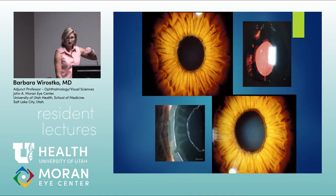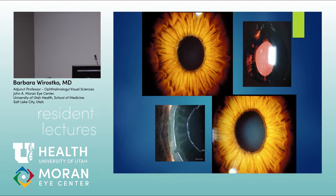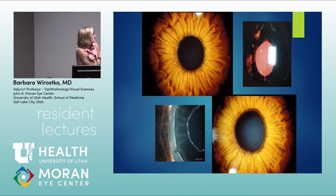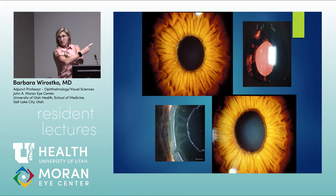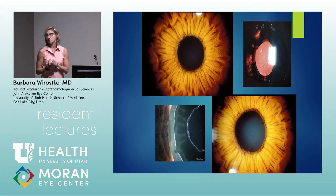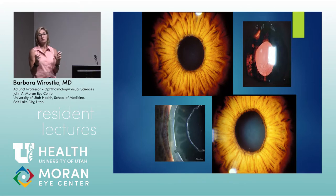The classic gonioscopic finding is a 'three ring sign' or 'bullseye' pattern. Transillumination defects appear in the mid-periphery as well as at the pupillary ruff. Always examine the pupillary ruff carefully — the material can be very subtle and difficult to diagnose. Capsular phimosis (contraction of the capsule) in a post-cataract patient should prompt consideration of missed exfoliation.